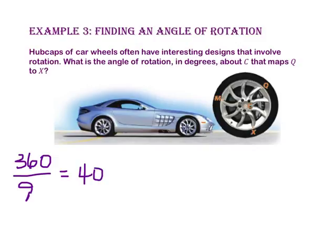To map point Q onto point X, I must move one, two, three, four, five, six spokes, or six times 40 degrees. This gives me a rotation of 240 degrees.